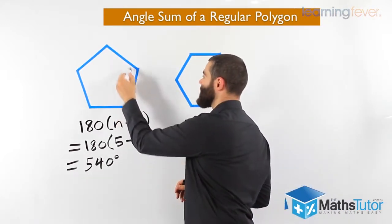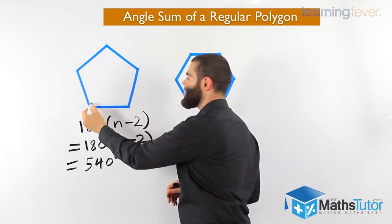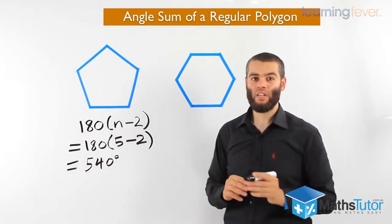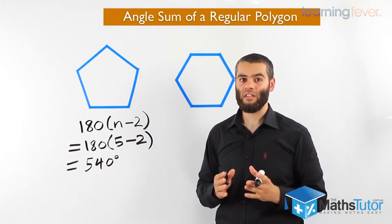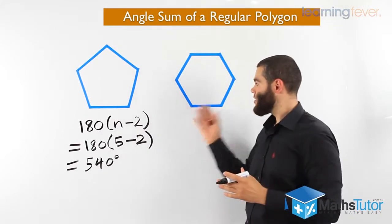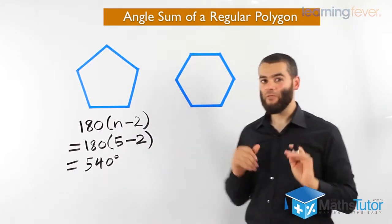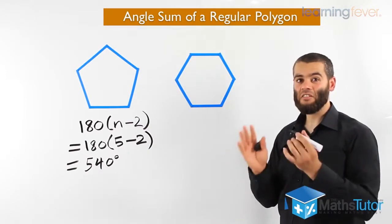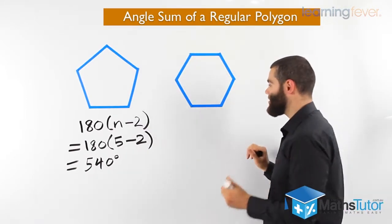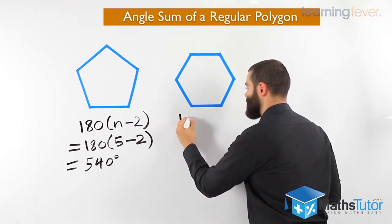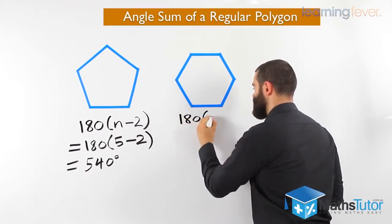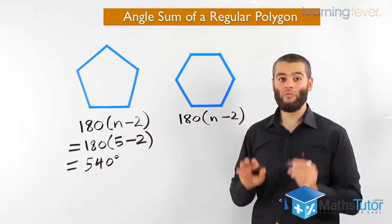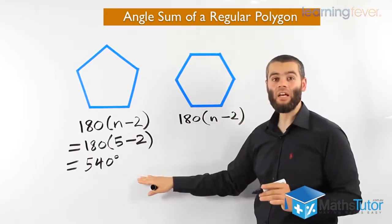That means this angle, plus that angle, plus that angle, plus that angle, plus that angle — all five angles added together add up to 540 degrees. Now for the hexagon, we use the same formula. We know the hexagon has six sides and it's a regular polygon. I always tell my students: write the formula first.